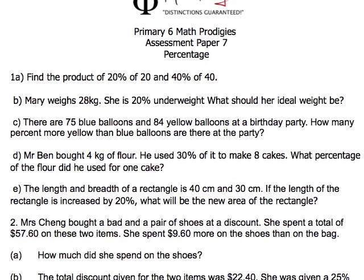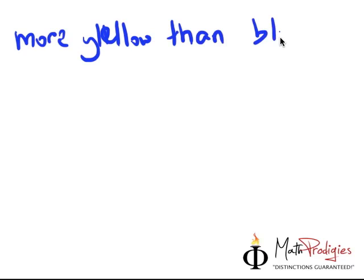And let's take a look at part C. There are 75 blue balloons and 84 yellow balloons at the birthday party. How many percent more yellow than blue are there at a party? Now, for this case, the phrasing is very important. How they ask you the question is very important. They say, how many percent more yellow than blue? More yellow than blue. Very important. How many more yellow than blue?